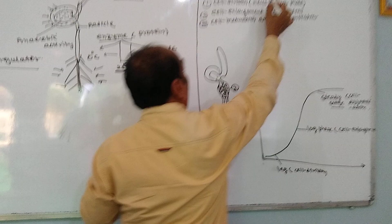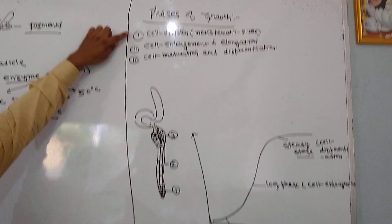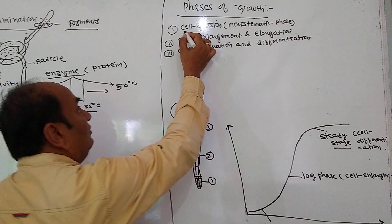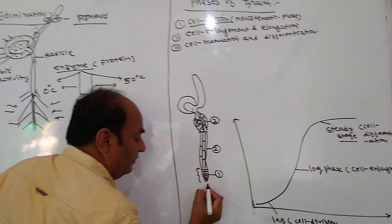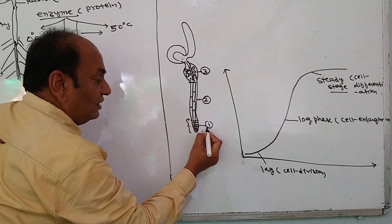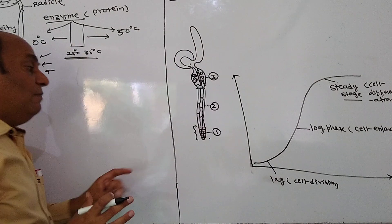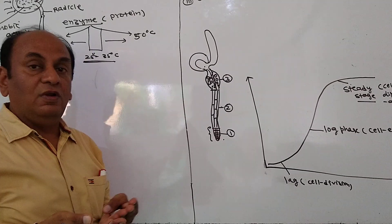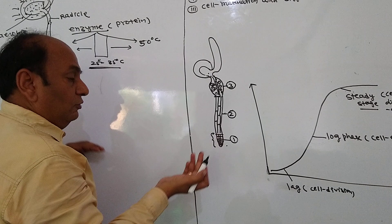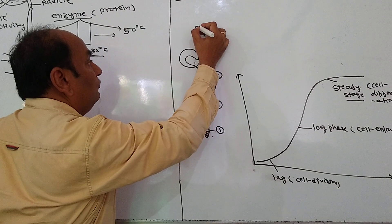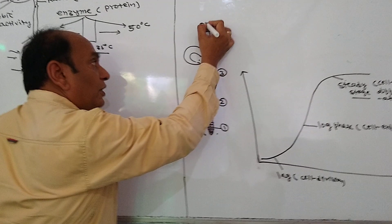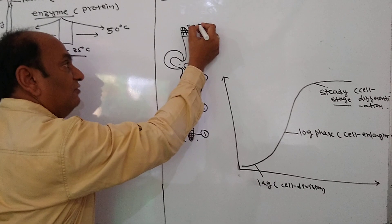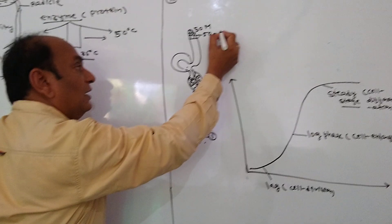Now we move to the phases of growth. There are three phases: cell division, cell enlargement, and cell maturation. Cell division means once the radicle comes out, at the tip there are meristematic cells. These meristematic cells continuously divide and re-divide, producing new cells. Suppose there are 50 to 100 cells — 50 remain meristematic and 50 become permanent.